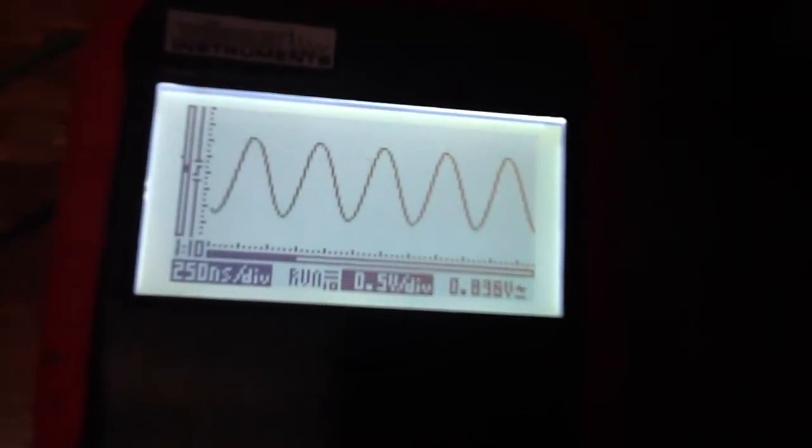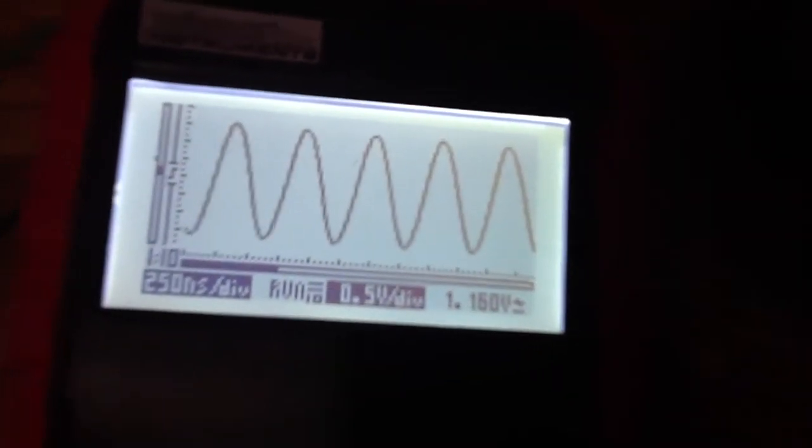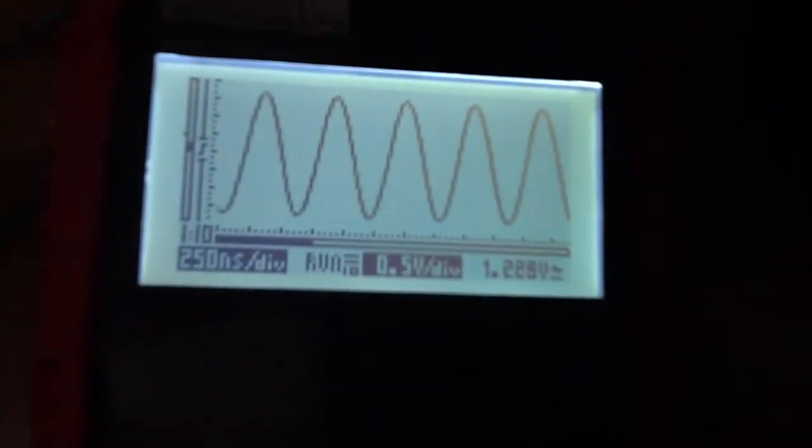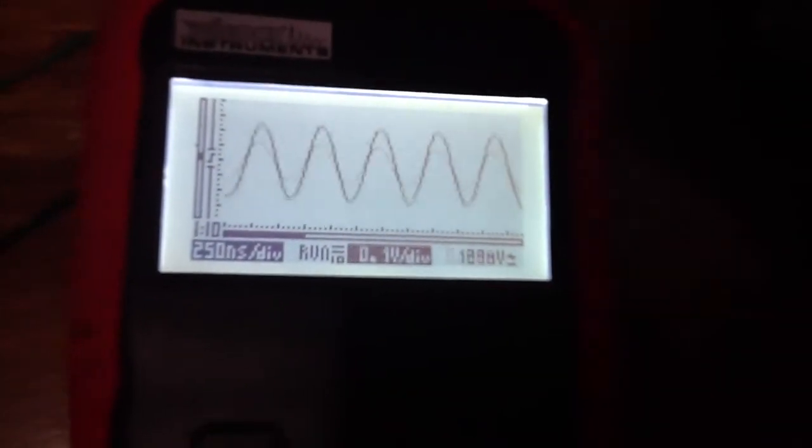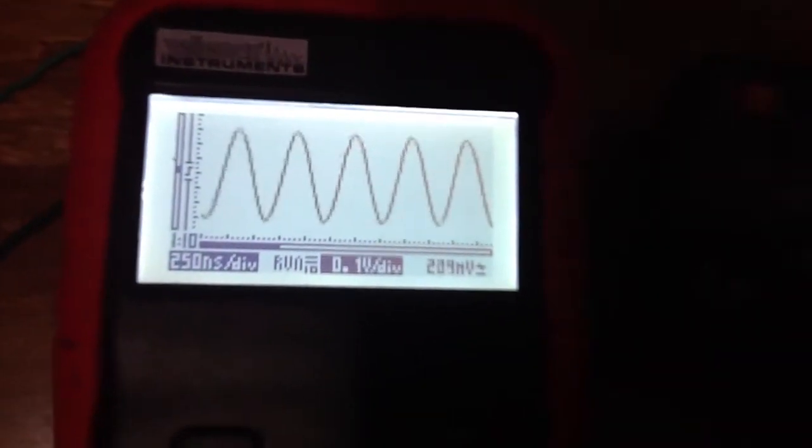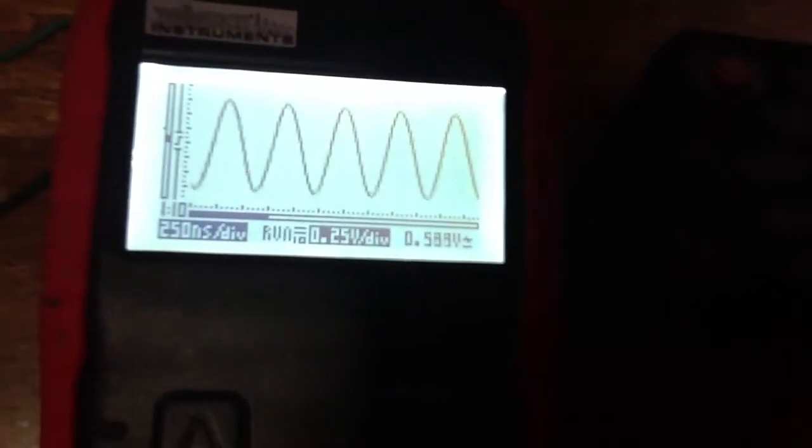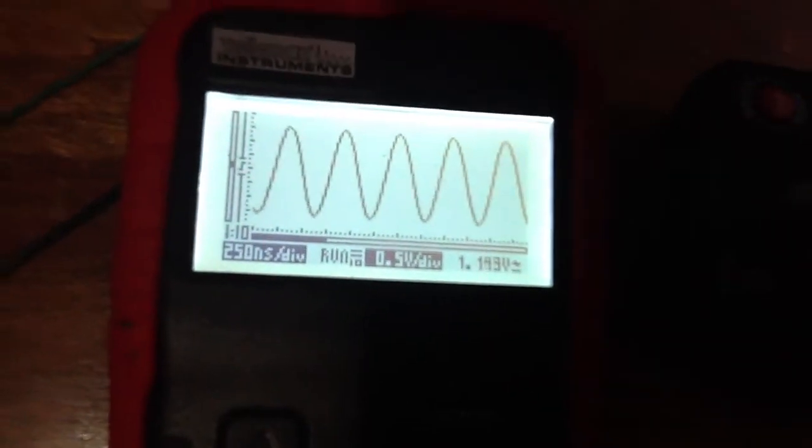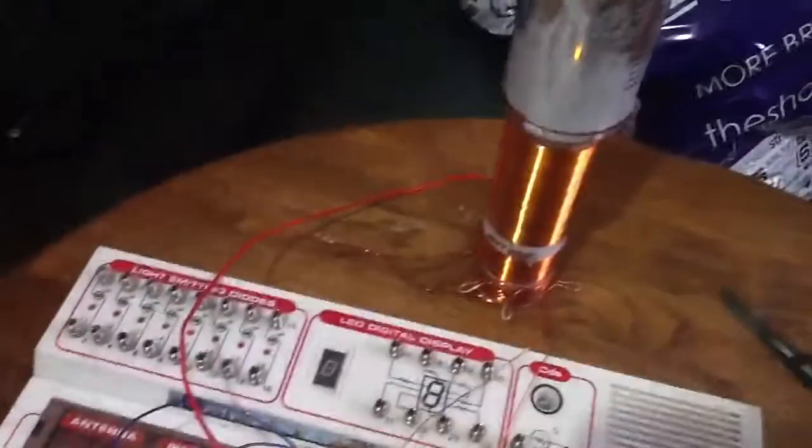So it's on auto, the times 10 setting. And yeah, you can see, start over here by the meter. Get closer, closer, closer, closer, and then about to here before the lights start to dim. So I don't want to do that.